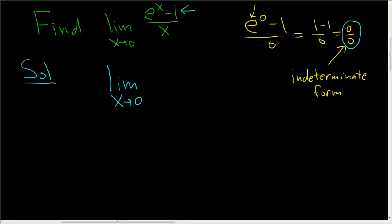So the derivative of e to the x is e to the x. The derivative of negative 1 is 0, so that's it.